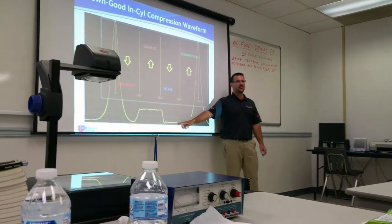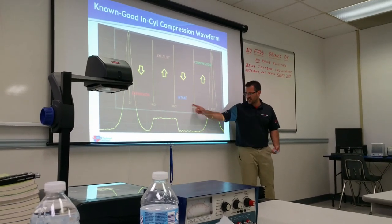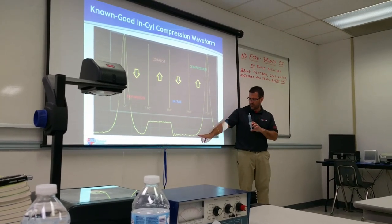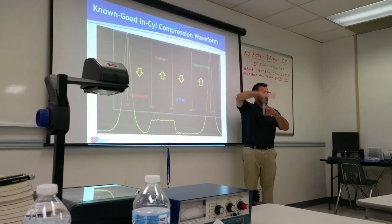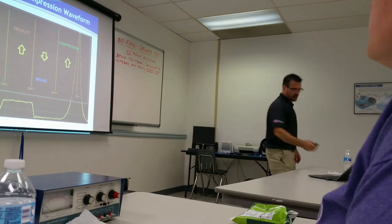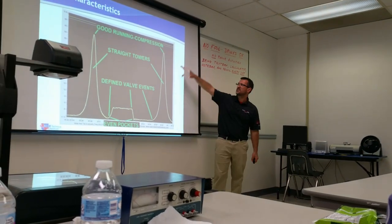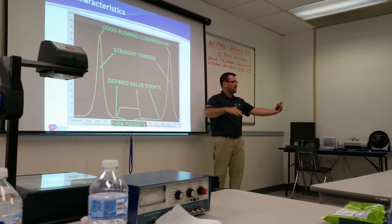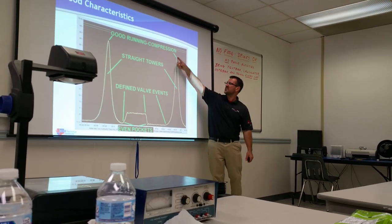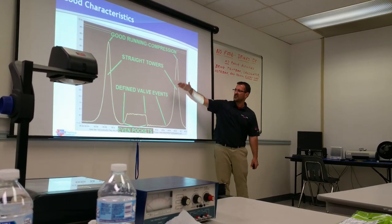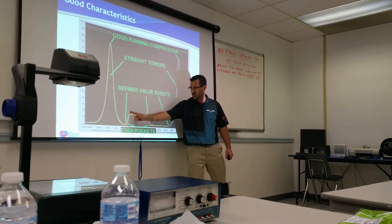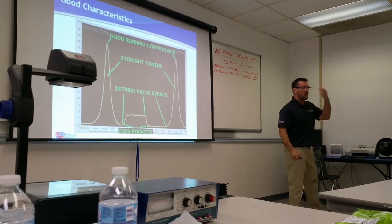If the piston starts going up, shouldn't we be building pressure here? Only if the cylinder was sealed — but the intake valve has not yet closed. So the piston is moving up but it's still open. The intake valve then closed and we start to build pressure. So this is how a pressure waveform works — that's the information located inside it. What I'm interested in are these points of significance: I want to see good compression, I want to see straight towers — the significance being we build pressure at the same rate we lose it. When they're straight it's good, when they're leaning it indicates a leak. And we want to see defined valve events — when something opens and closes, if it's healthy we'll see rapid changes in pressure. Knowing that, I'm going into this diagnosis.